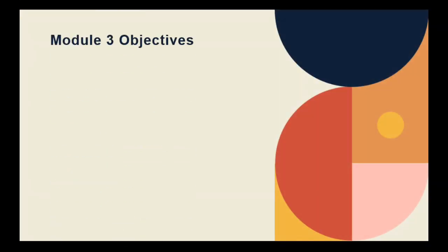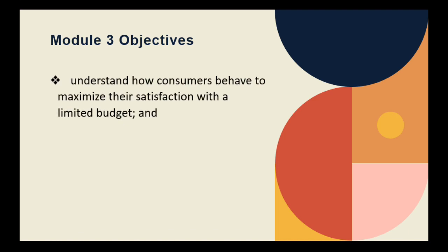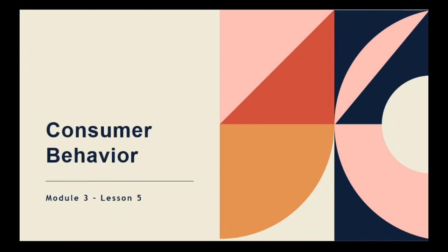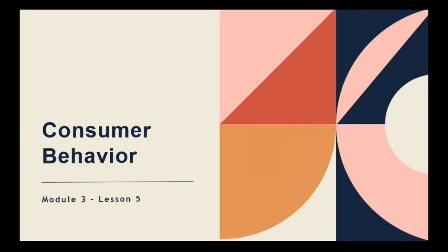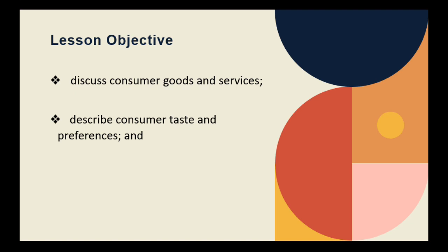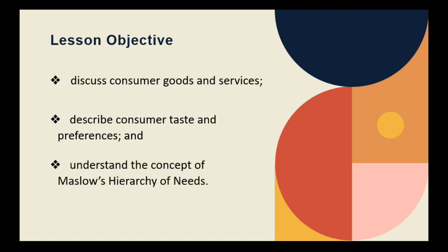At the end of this module, you should be able to understand how consumers behave to maximize their satisfaction with a limited budget, and understand how market forces determine the supply of goods and services. Let's go! We will dig deeper on the fifth lesson in our course for Microeconomics under Module 3, which is Consumer Behavior. Our intended learning outcomes are: to discuss consumer goods and services, to describe consumer tastes and preferences, and to understand the concept of Maslow's Hierarchy of Needs.